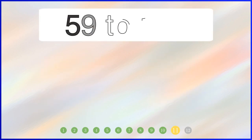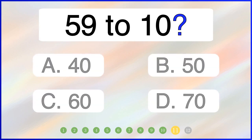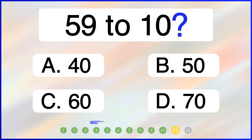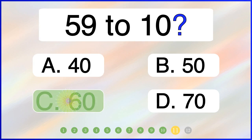What is 59 rounded to the nearest 10? The correct answer is option C: 60.